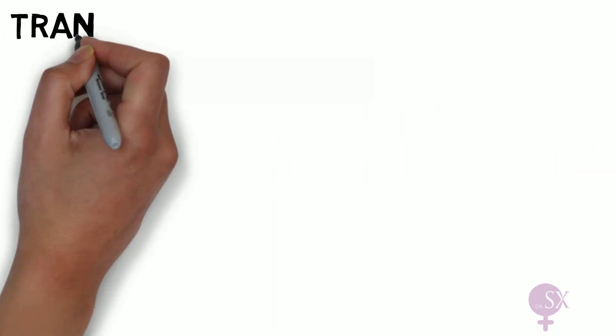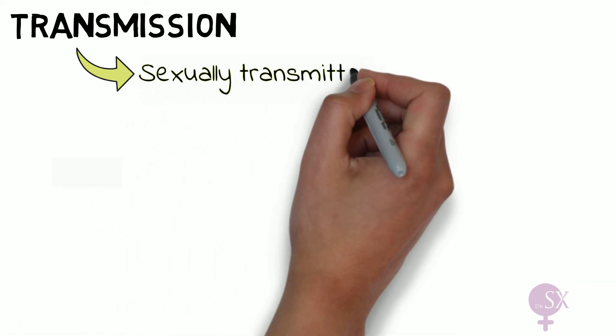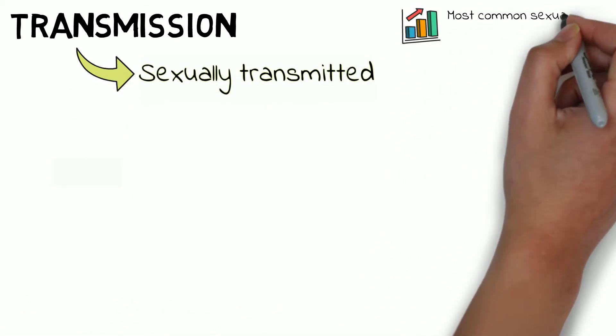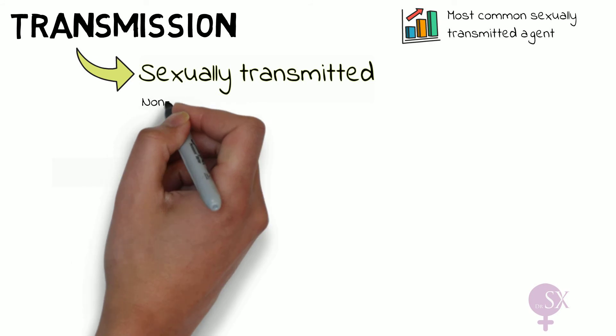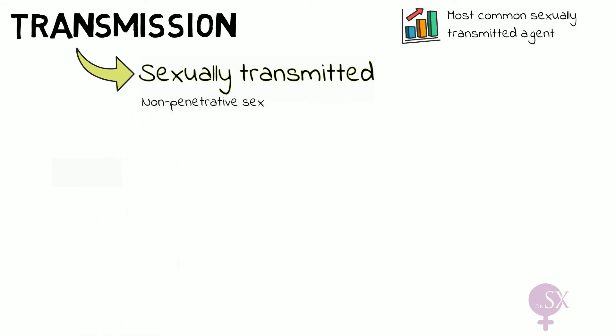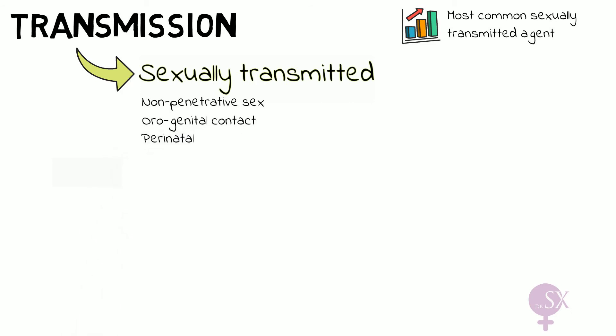HPV is mostly sexually transmitted — it is the most common sexually transmitted agent. It occurs by contact with genital lesions or genital secretions containing the virus. Micro-abrasions in the recipient skin allow the virus to access the basal epithelial layer. HPV can also be transmitted with non-penetrative sex, orogenital contact, and perinatally through an infected birth canal.